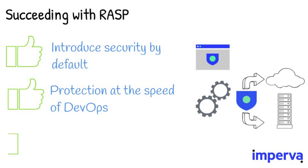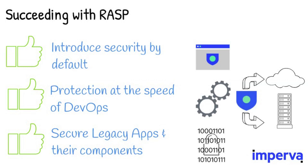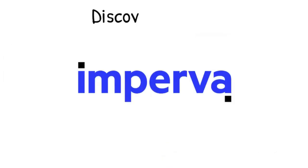And lastly, secure legacy apps and their components. RASP secures apps from known attacks and zero-day exploits. Using patented techniques that treat data as code, RASP protects apps without signatures or updates, with very low performance overhead. Discover more at imperva.com.